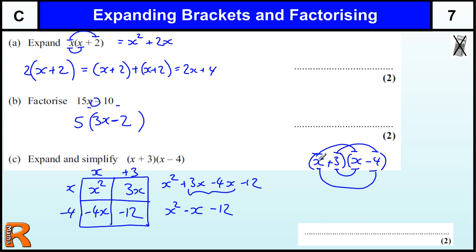It's also called FOIL because you do the first two, x times x, which is x squared. Then you've got the outer two, x times minus 4, which is minus 4x. Then we've got the inner two, 3 times x, 3x. And then we've got the last two, 3 times minus 4 is minus 12.